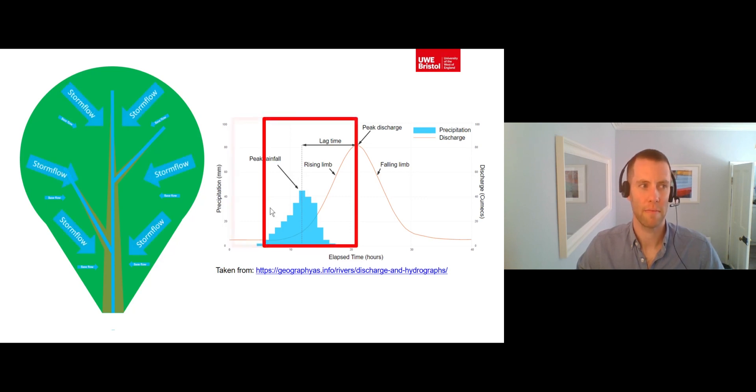Following a rainfall event, overland flow and through flow move quickly down the hill slopes into the river channel. This storm flow quickly increases the discharge in the river until the peak discharge is reached. The rising limb of the hydrograph shows how the discharge levels rise as the channel is filled with storm flow, with the time taken from peak rainfall to the peak discharge known as the lag time.